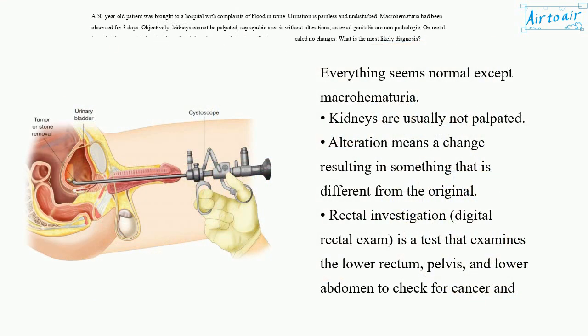Everything seems normal except macrohematuria. Kidneys are usually not palpated. Alteration means a change resulting in something that is different from the original.